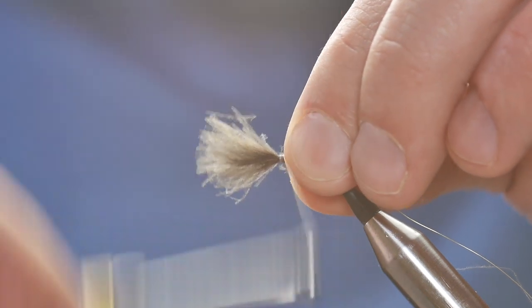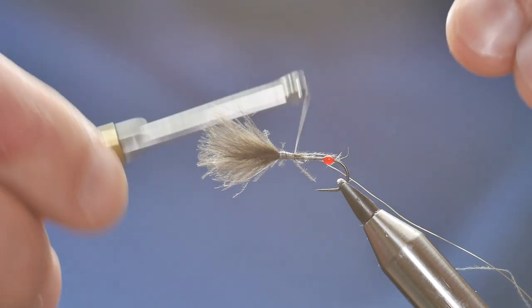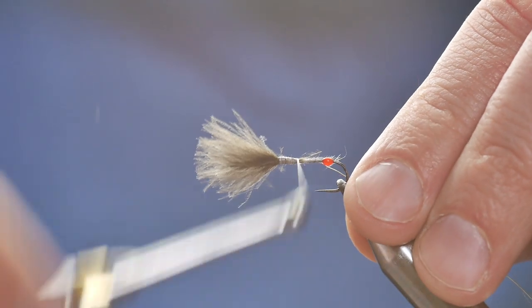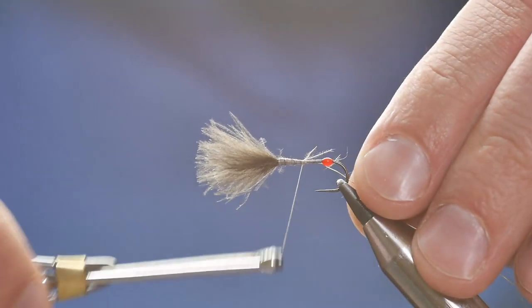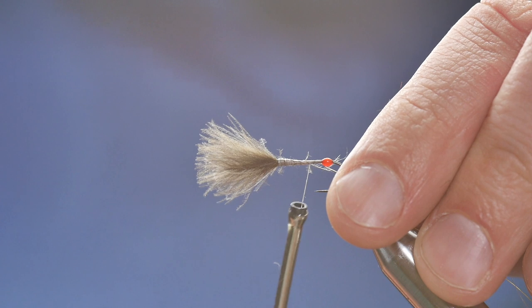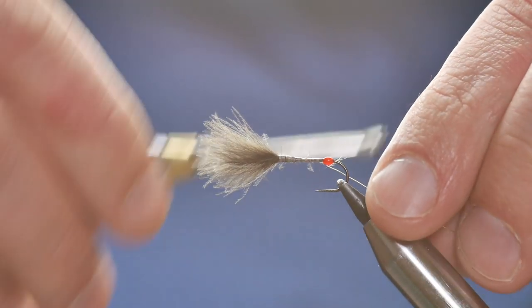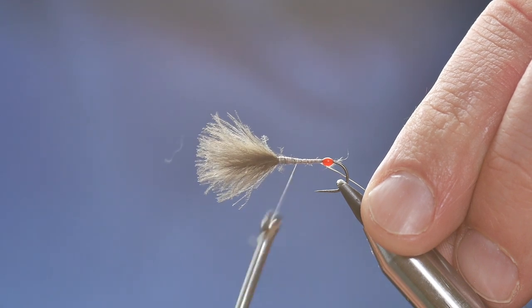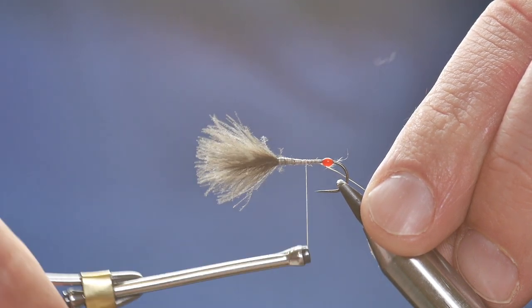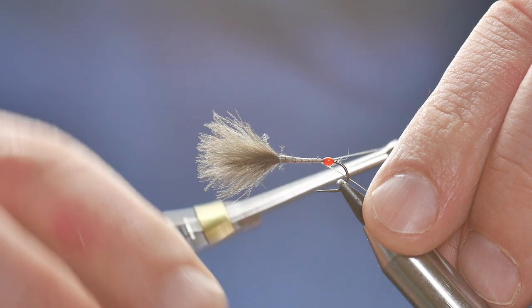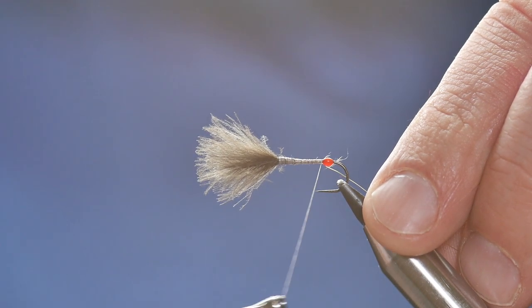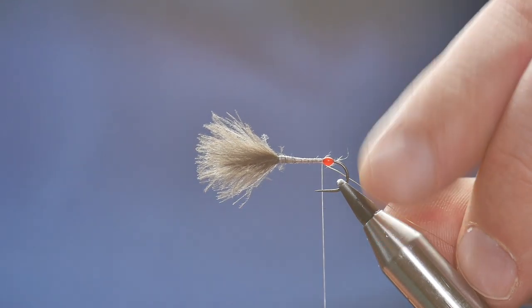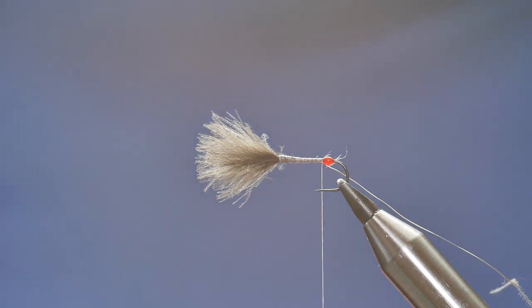Then, I'm going to just build a taper into the body, which is easy now, because once you've tied the CDC in, it almost creates the taper for you naturally. But if you're not happy with it, you can just work on it a bit. Bringing it all the way to the back where your hot spot is again.